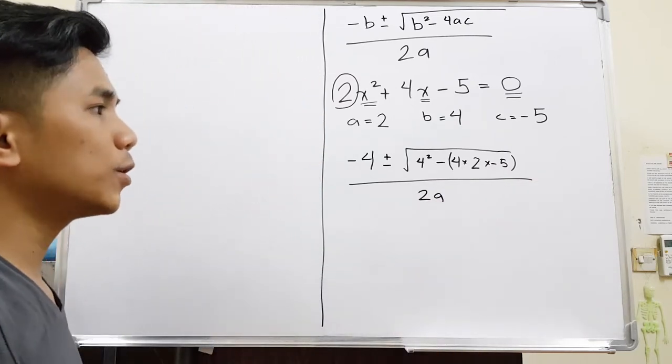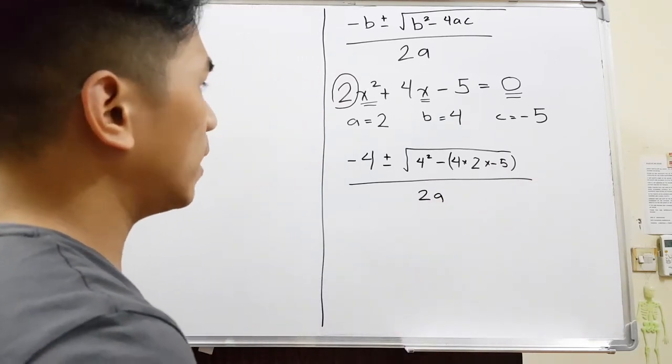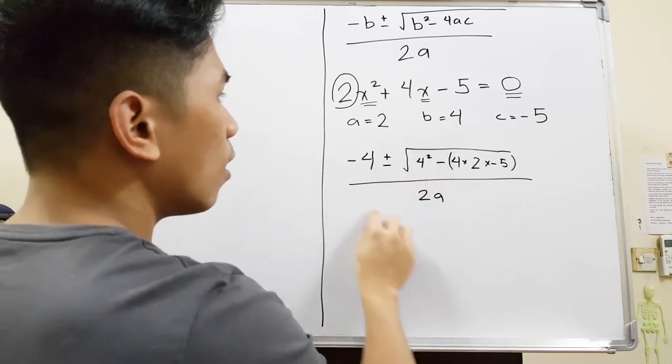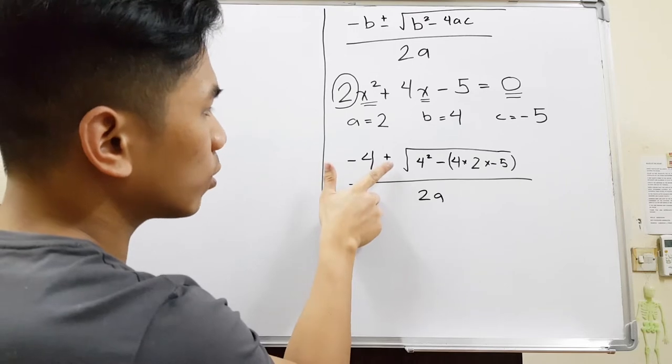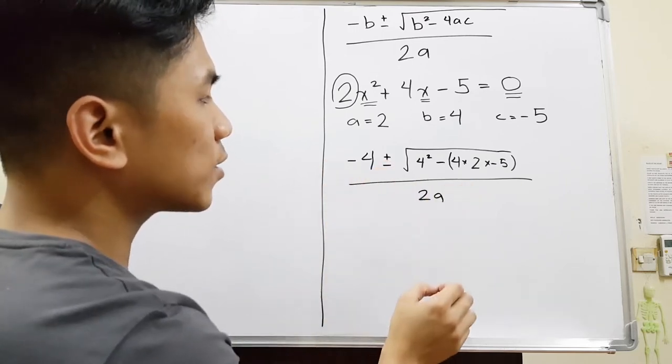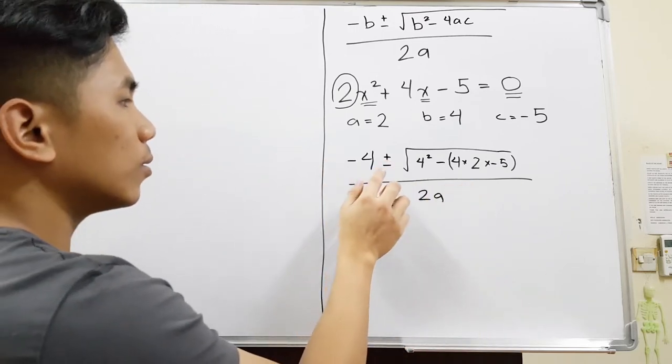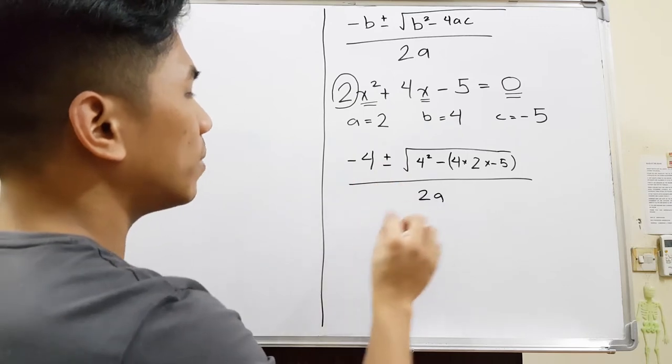If you are allowed to use a calculator, this will be easier. All you have to do is put this in the calculator. Just take note, you cannot put two signs, so you will first put plus and you will get an answer. Once you get an answer, you will now change the plus into minus, and that will be the second answer.